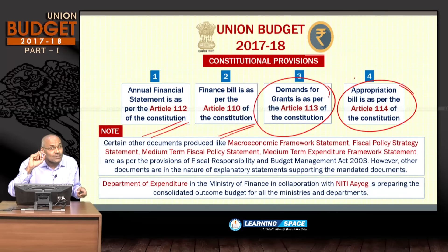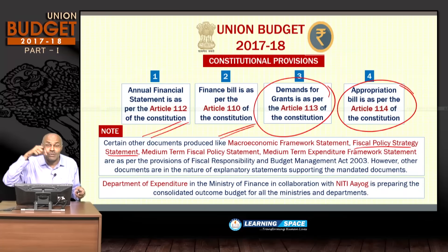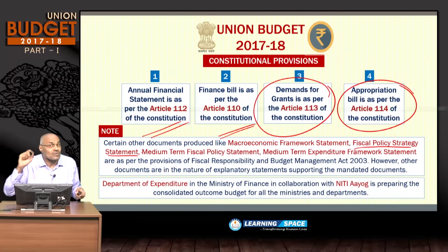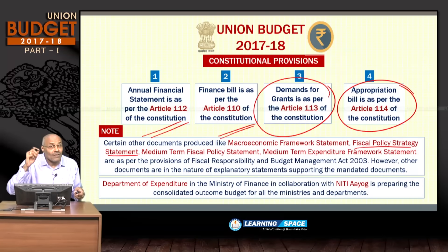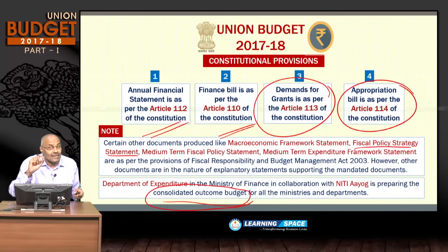The budget also contains certain other statements — such as the Fiscal Policy Strategy Statement and Medium Term Fiscal Policy Statement — which are as per the Fiscal Responsibility and Budget Management Act of 2003, not the Constitution. Additionally, the Department of Expenditure in the Ministry of Finance, in collaboration with Niti Aayog, prepares the Consolidated Outcome Budget.